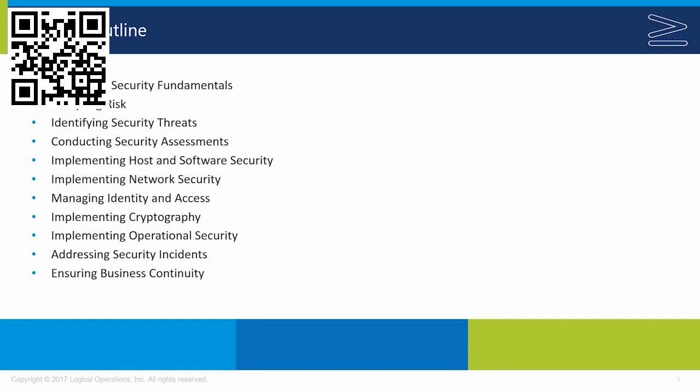We looked at conducting security assessments to identify what security is currently in place and whether it's adequate. Several chapters covered implementation of operating system security through hardening, patch management, and anti-malware. Network security included VPNs, encryption, and security devices like proxy servers and firewalls. For identity and access, we have user account databases, secure sign-in processes for authentication, and access control based on identity. We also leveraged cryptography to keep authentication and data transfer secure, and examined the importance of policies and procedures for operational security.